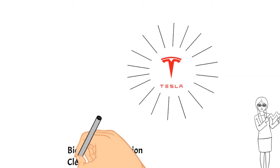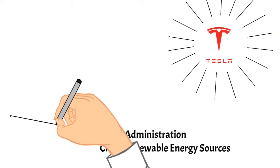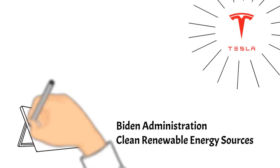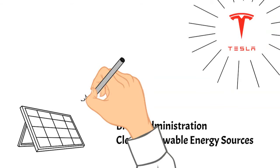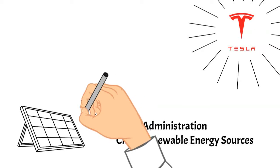Analysts believe that because Biden administration is in favor of clean renewable energy, Tesla will benefit from this change in political climate. Biden administration also rejoined the Paris Climate Treaty, showing that they are serious about reducing carbon footprint and listening to science.